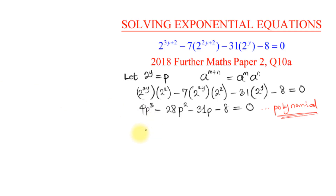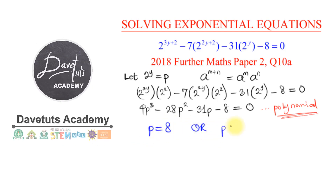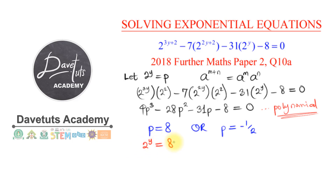Moving forward, for this equation p equals 8 or p equals minus 1 over 2. We were originally given y, not p. We said 2^y equals p, so now I can say: 2 raised to the power of y equals 8, and 8 can be expressed as 2 raised to a certain power.